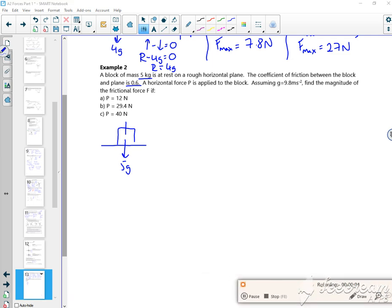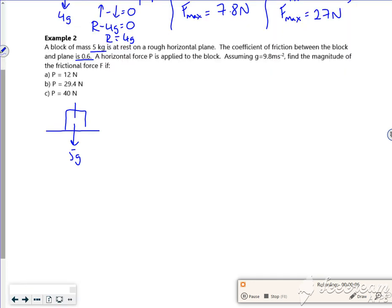I knew I shouldn't have got carried away then, I shouldn't have checked my time, but never mind. Right, so I've got this example, I've got 5G acting, it's just sat there, I'm going to push it with a P, and I'm going to have friction stopping it.